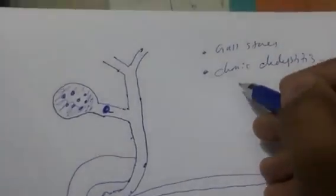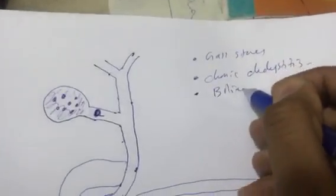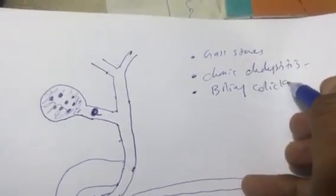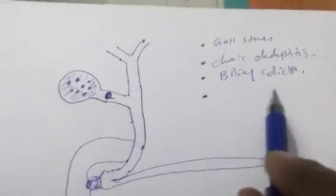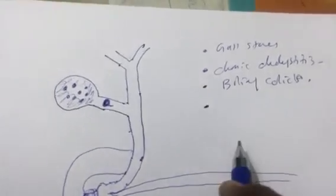If the stone migrates down and obstructs the cystic duct, we have biliary colics. The pain will be colic in nature and more severe. The patient may need admission for a short duration, and you have to prepare for surgery later on.